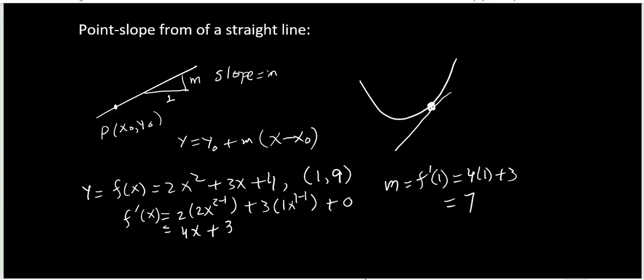So the equation of this tangent line will be y equals y naught is 9 plus slope is 7 and then x minus 1.